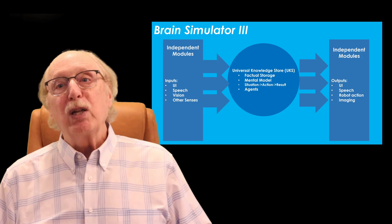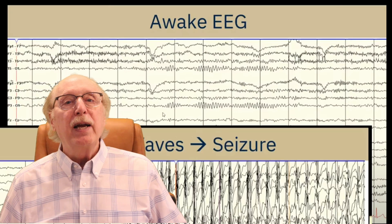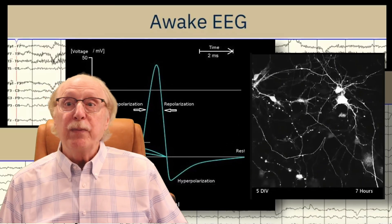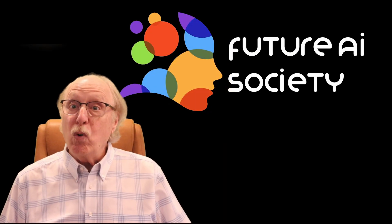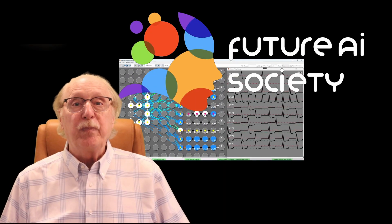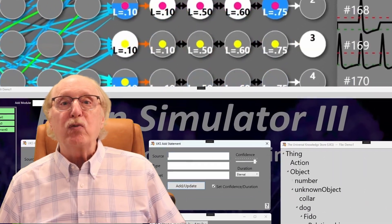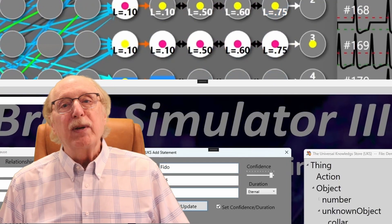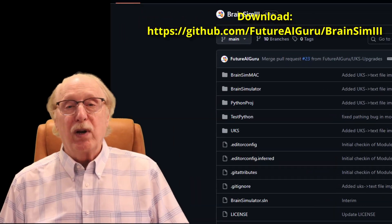I'm Charles Simon, long-time AI researcher, software developer, and manager. Beyond AI, I've developed software for neurological test instruments and neural simulators. I created the Future AI Society to explore how neuroscience can inform smarter, more human-like AI. I'm using the open-source Brain Simulator projects for simulations and demonstrations throughout this video series. If you want to experiment on your own, you can download the Brain Simulator 3 from GitHub and try it out.